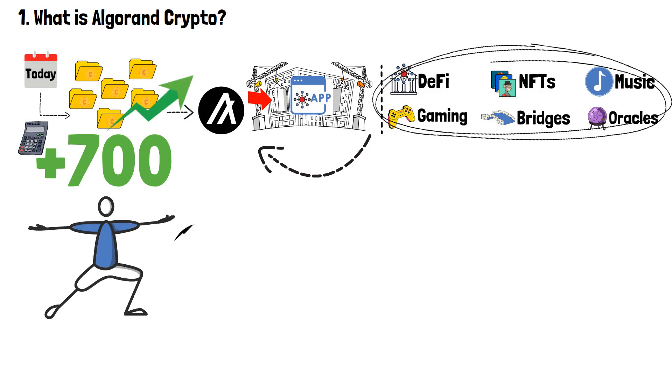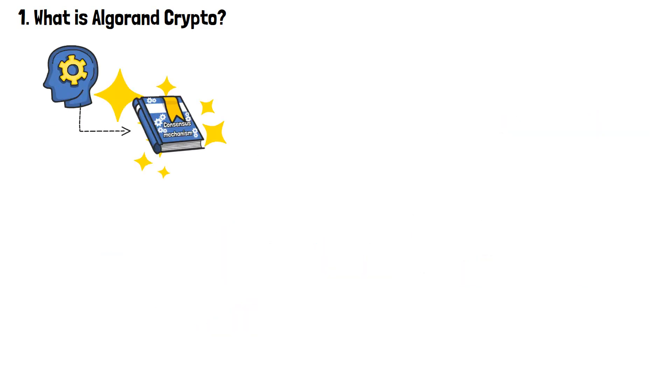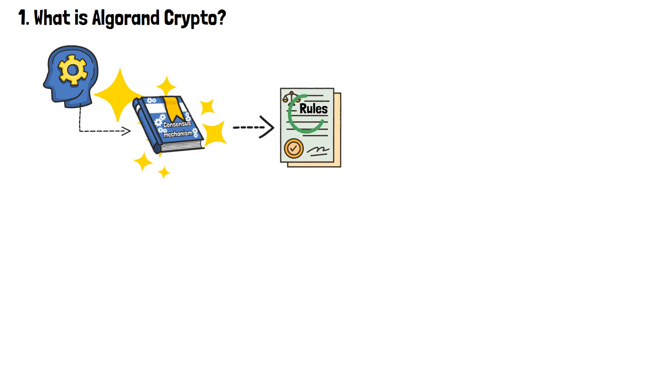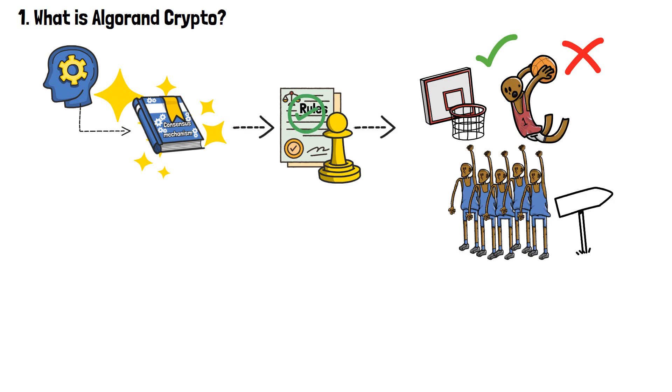But there's something else that makes Algorand different from other mainstream blockchain projects. It's the consensus mechanism that supports the Algorand system and defines the answer to the question of what is Algorand in crypto. As a reminder, a consensus mechanism is like a set of rules that every network participant agrees to act upon. It's just like the rules of a game, let's say basketball. There are things that are allowed and others that are prohibited, but every player agrees upon them before starting a game.